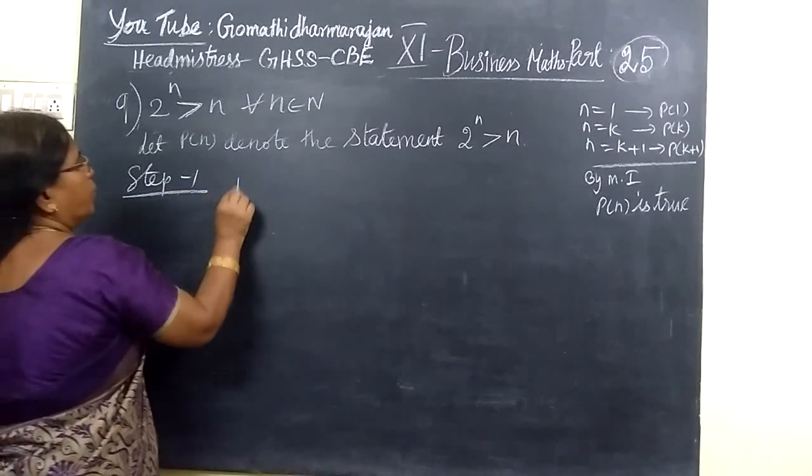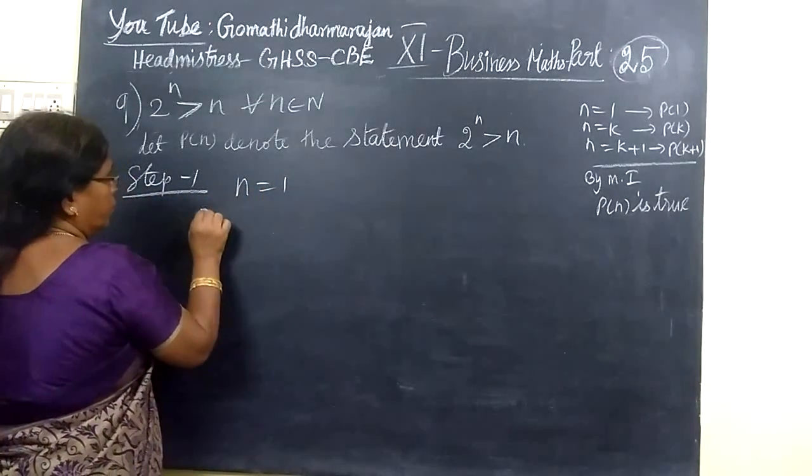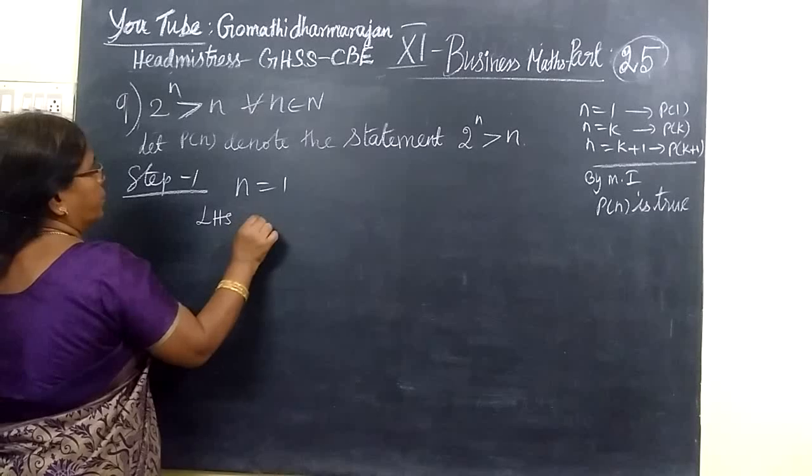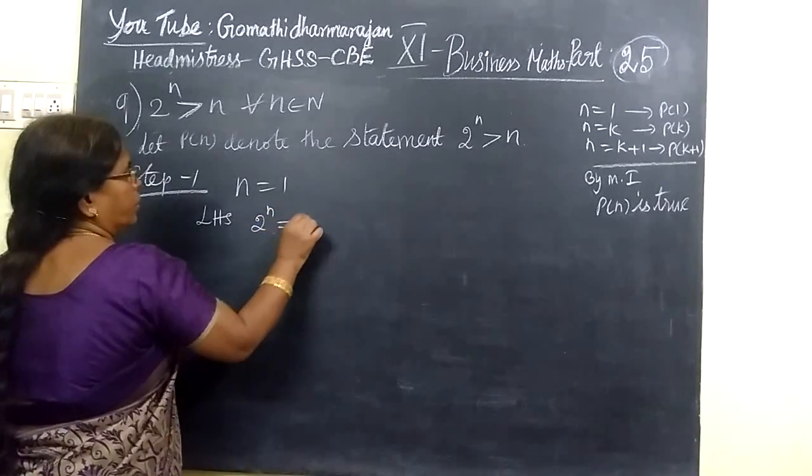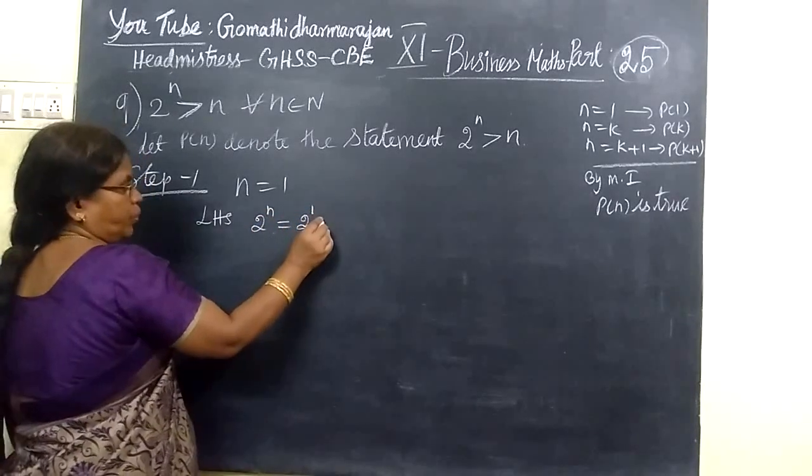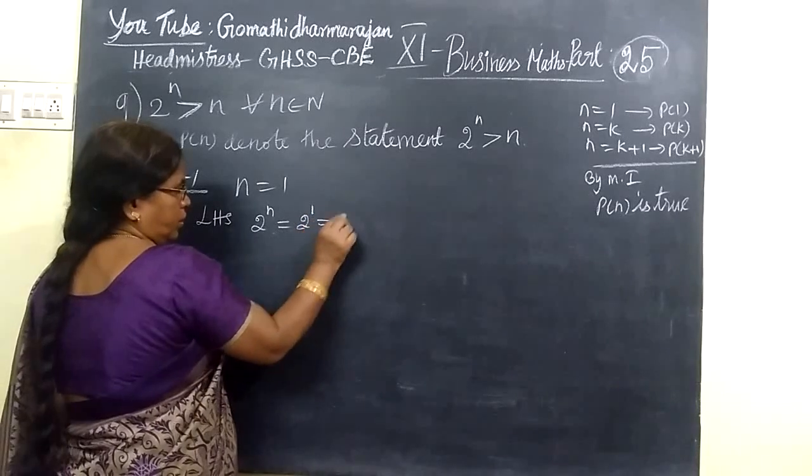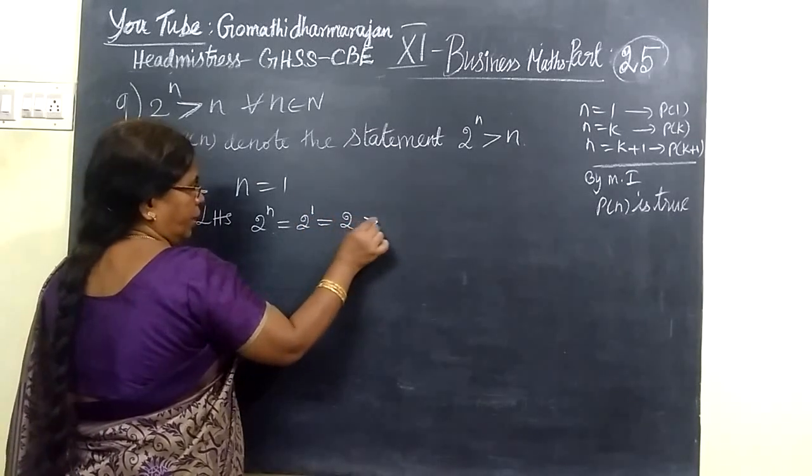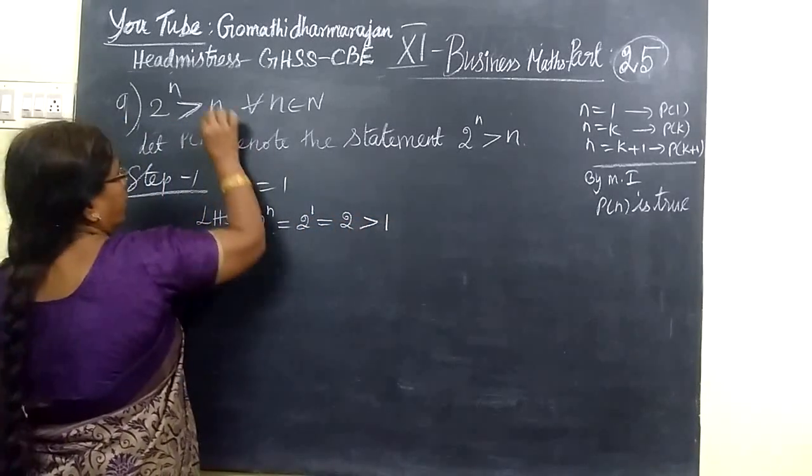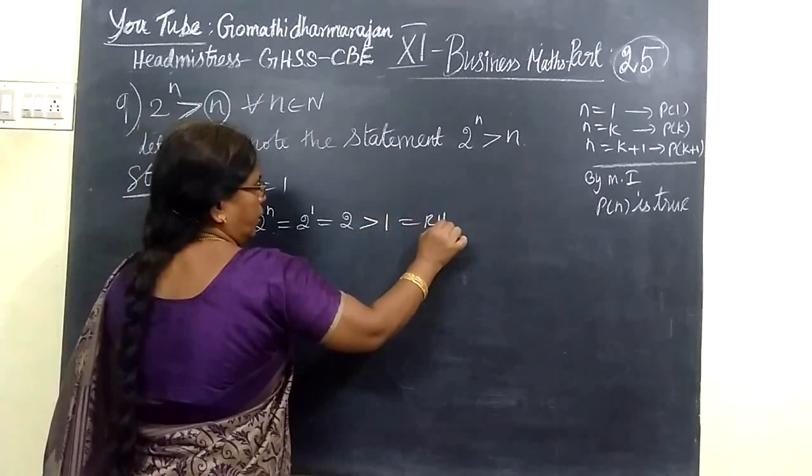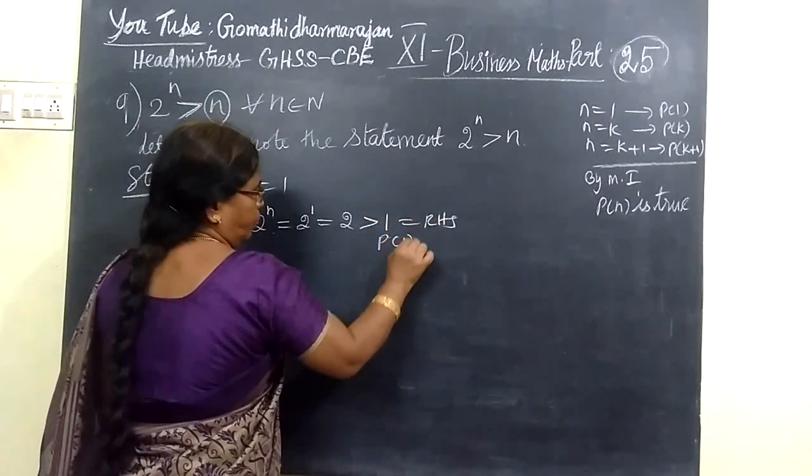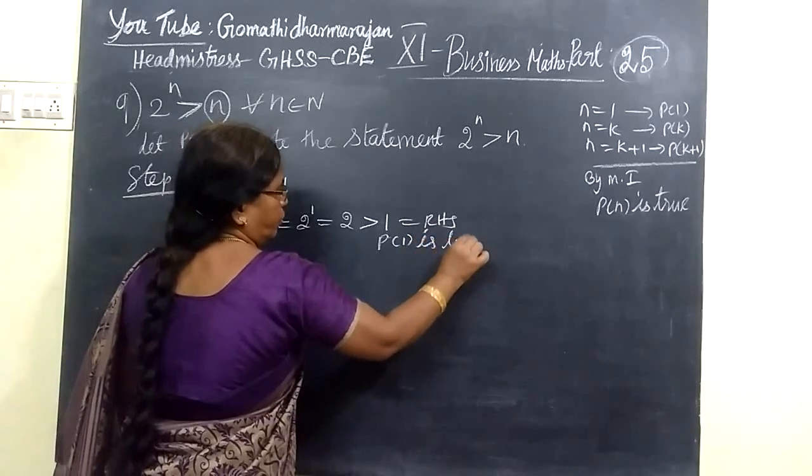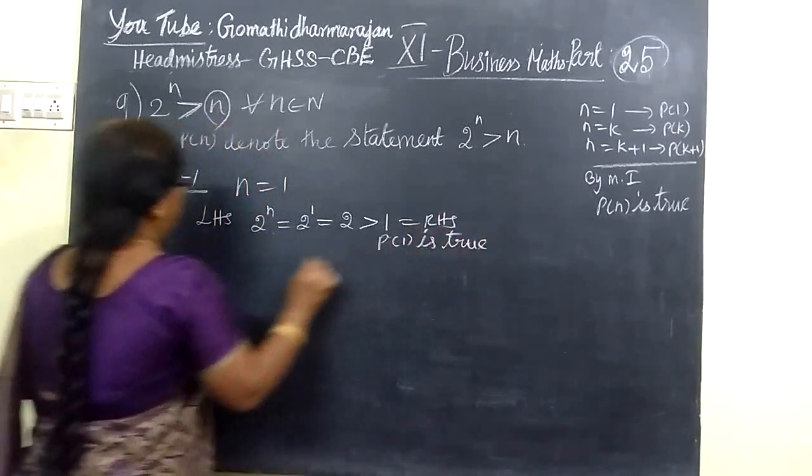Step 1 is n number. n equal to 1. Therefore, consider L is 2 power n equal to 2 power 1. So that is equal to 2, which is greater than 1. This is equal to RHS. Therefore, P of 1 is true. So first step over.